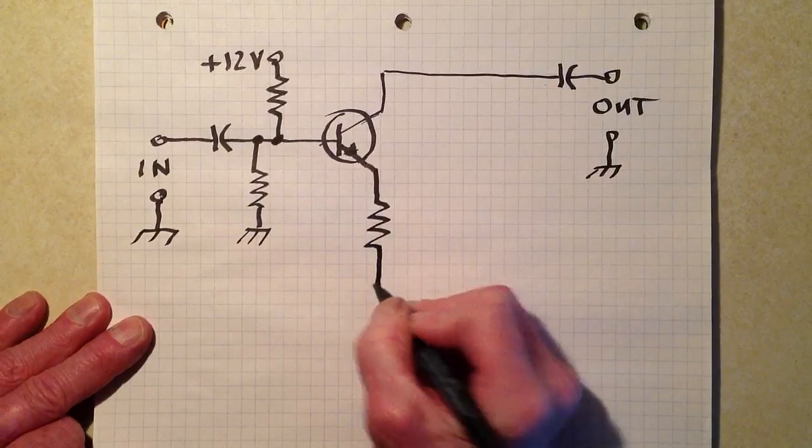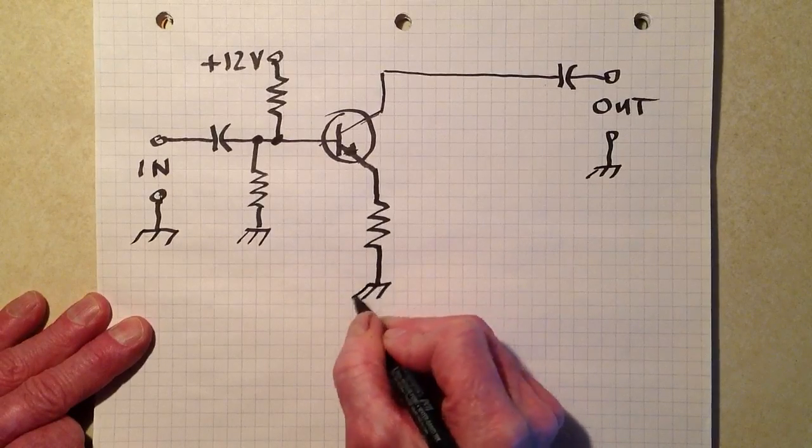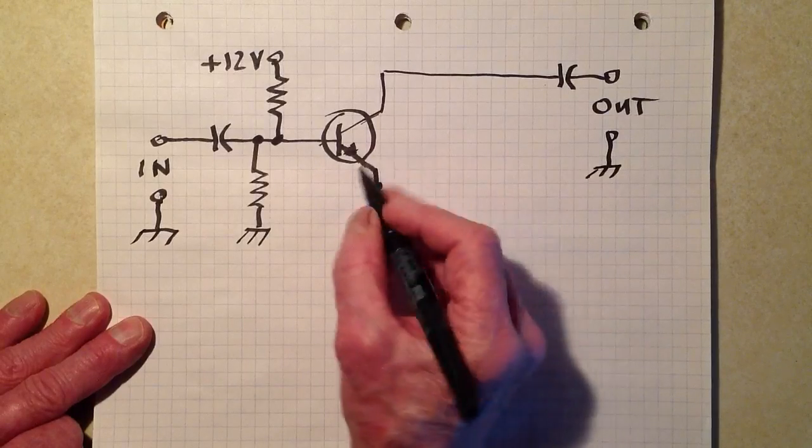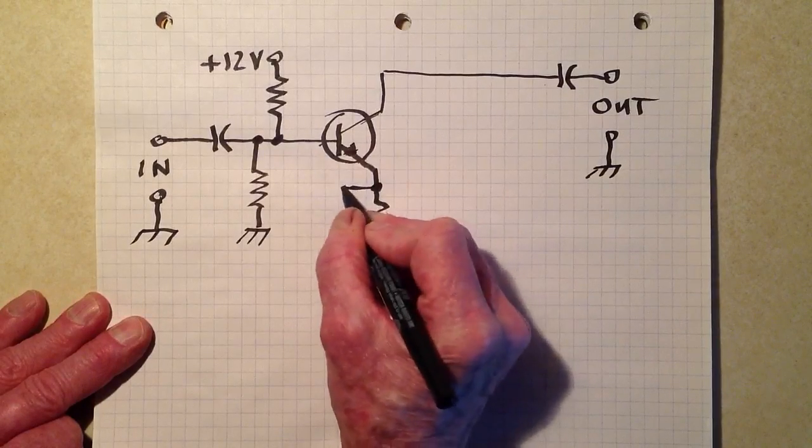So in order to assist with that biasing, to ensure proper biasing, we put a resistor in series with the emitter and a capacitor across that resistor.